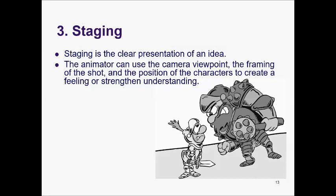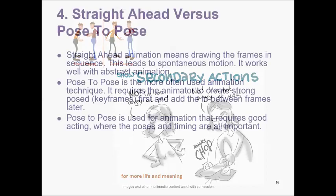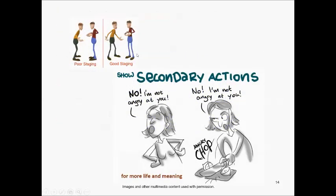Principle number three is staging — the clear presentation of an idea. The animator can use the camera viewpoint, the framing of the shot, and the position of the characters to create a feeling of strength and understanding. Poor staging shows a character from one side only, causing misinterpretation. Good staging shows the character facing front, revealing the face clearly and giving more meaning to the action through secondary actions.